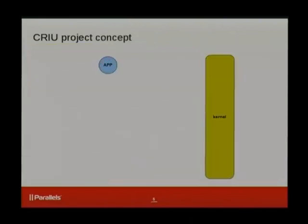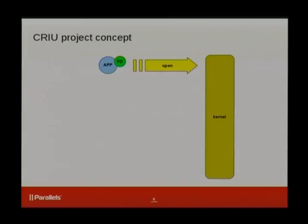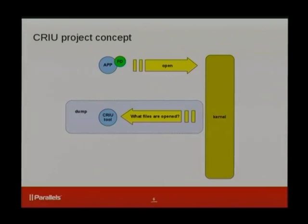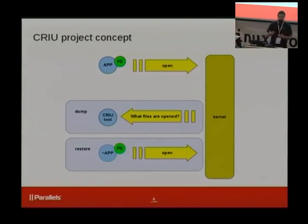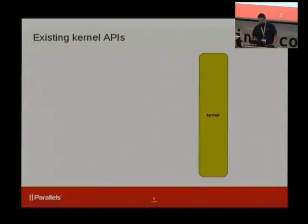To do this, we basically do two core things. If an application called an open system call and obtained a file descriptor, in order to dump this state we need to ask the kernel which files are opened by this application, what other resources it has, what state those resources are in, how are they shared, and what are the identifiers. Later, when we want to restore the state, this task is much simpler because if the state was achieved by the application calling an API, we can do the same.